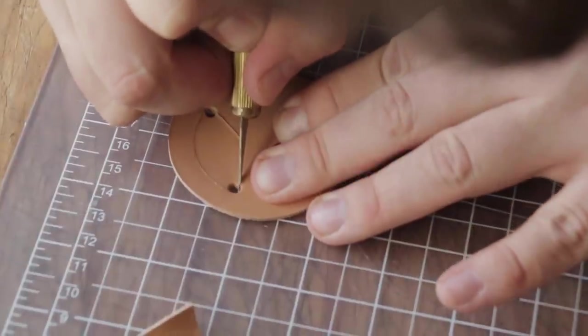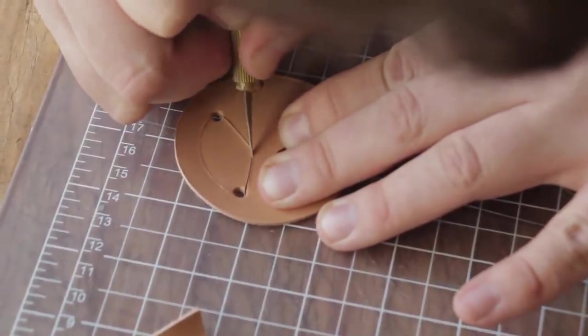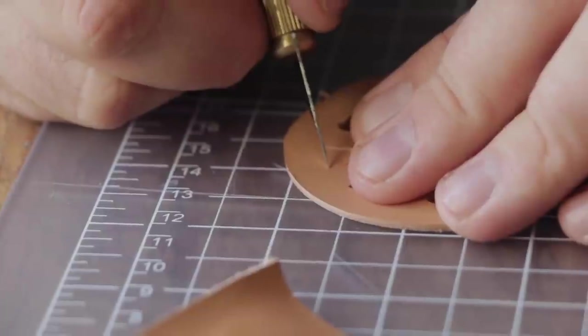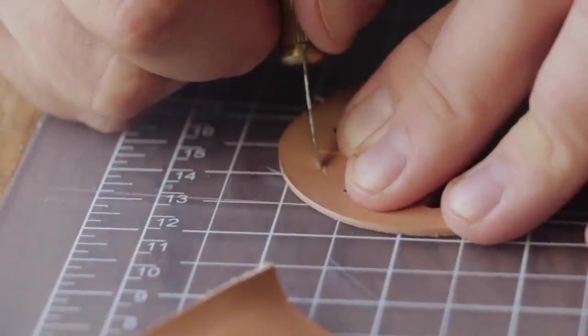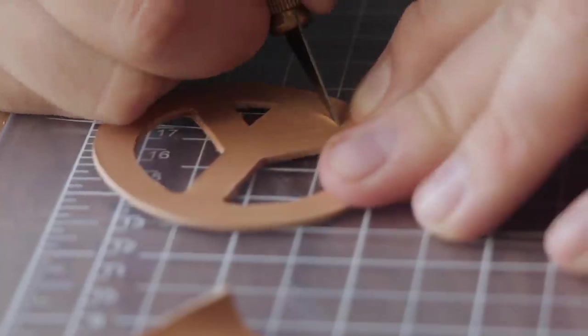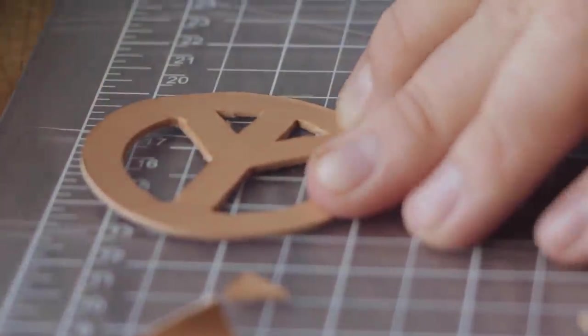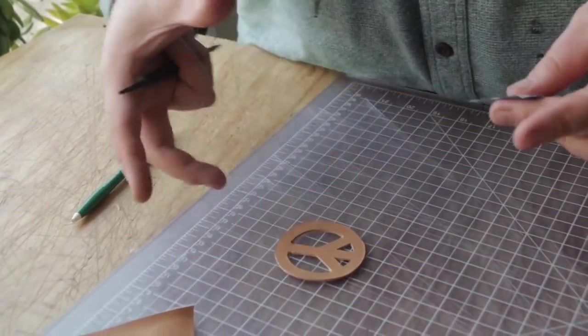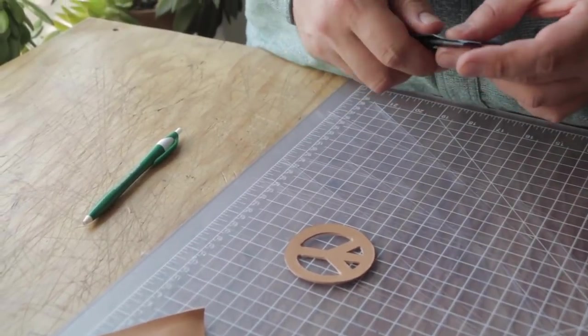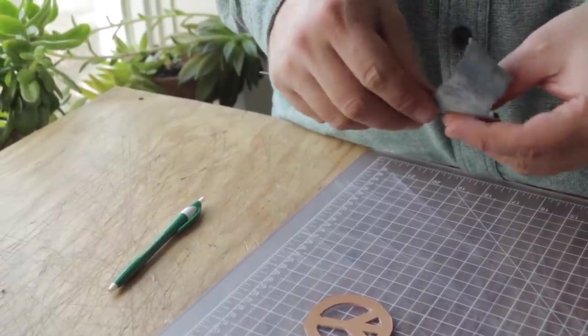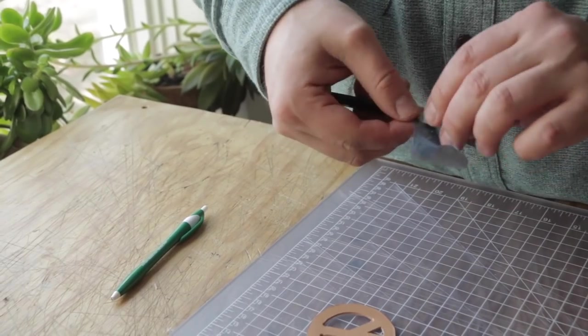So once we have everything cut out, if you're doing kind of a more intricate shape it's going to be a little bit haggard looking unless you're really good with a knife. So what I do is I'm taking some worn out sandpaper.